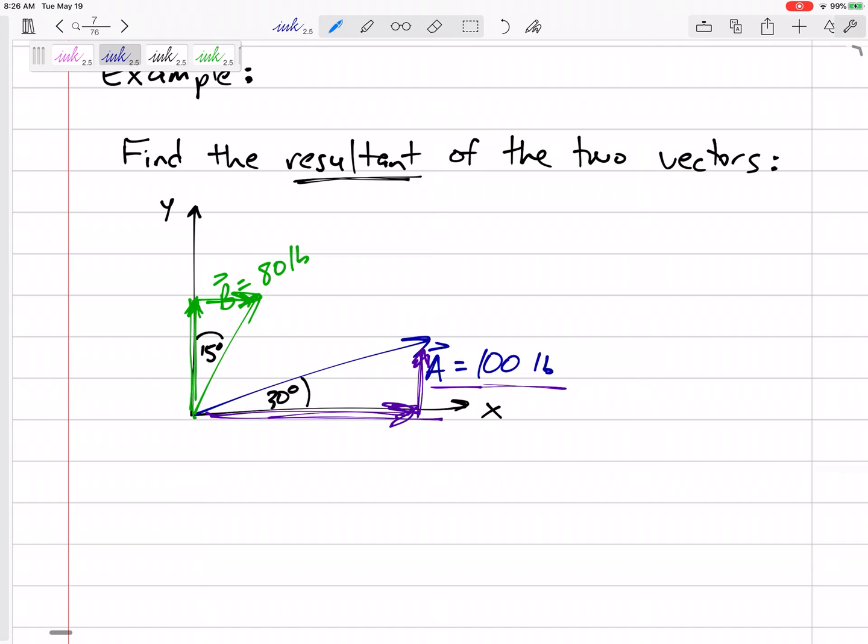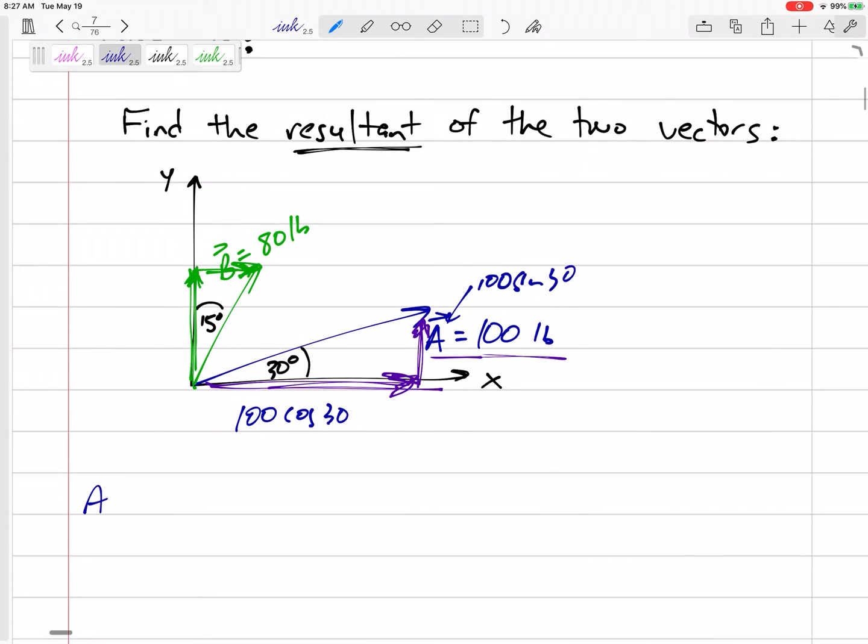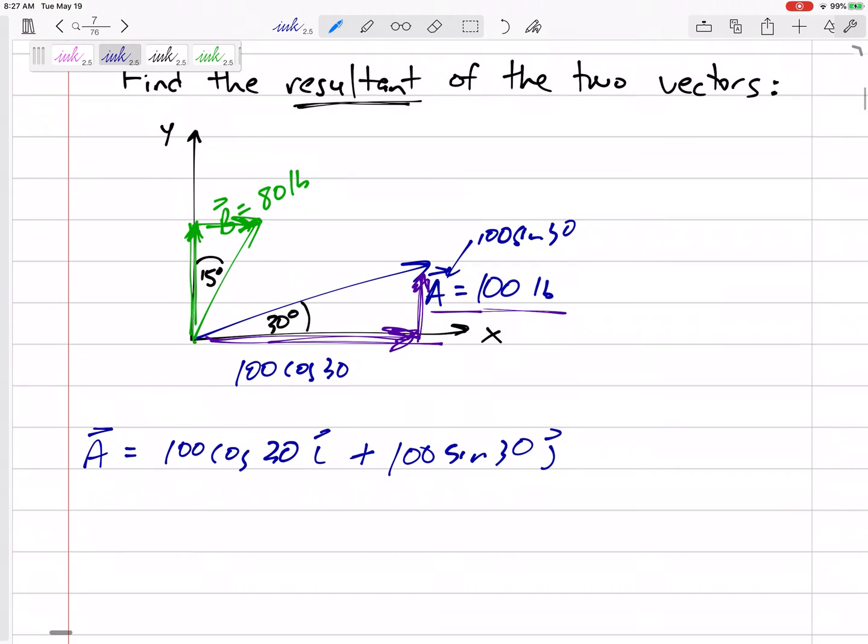Let's start with this blue one. Let's break this into its components. This component would be 100 cosine 30, this component would be 100 sine 30. We could write this as 100 cosine 30 in the i positive and positive 100 sine 30 in the j, which equals 86.6 in the i and 50 in the j. That's that blue A vector.